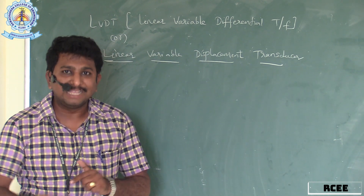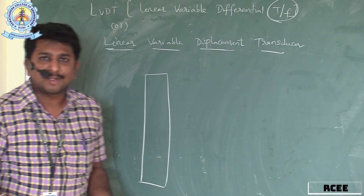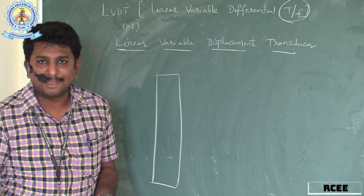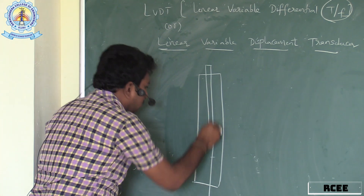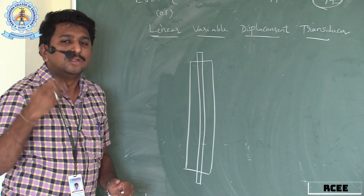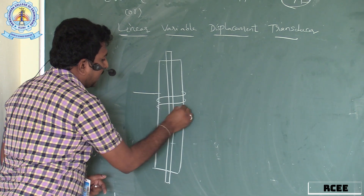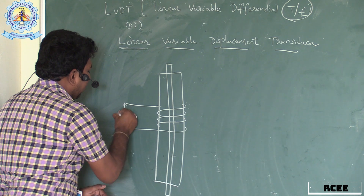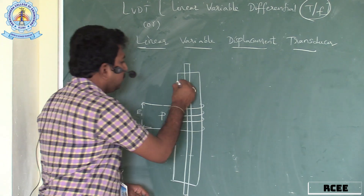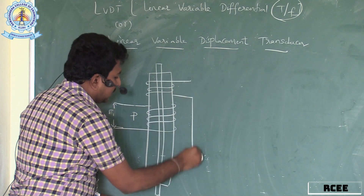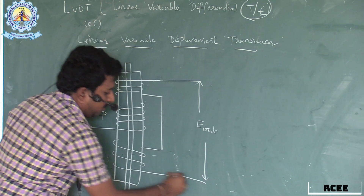The basic diagram of LVDT: since the name shows 'transformer,' as we know a transformer consists of primary and secondary windings, LVDT also consists of different types of windings. LVDT has a primary winding — let it be P (P stands for primary) — where we can give the supply.